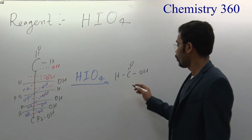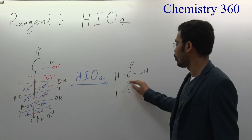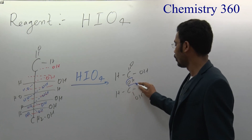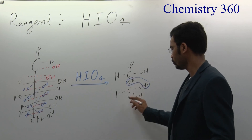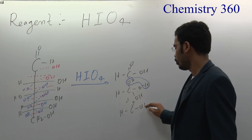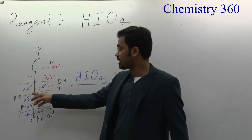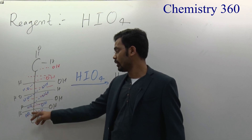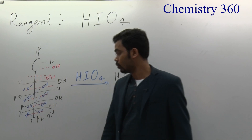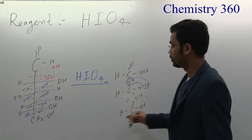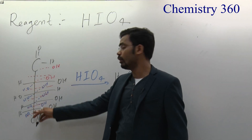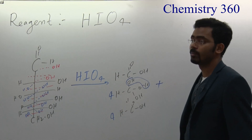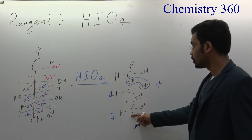From a carbon with 3 OH groups, remove one water molecule and it forms H-C(=O)-OH (formic acid). This carbon also has 3 OH — 1, 2, 3 — and this one also has 3 OH — 1, 2, 3 — and this one has only 2 OH. So counting the products: 1, 2, 3, 4 — there are 4 moles of one type, plus formic acid from another carbon, giving 5 moles of formic acid total.